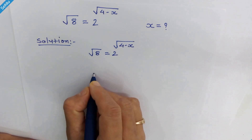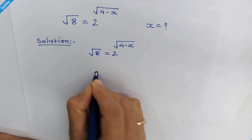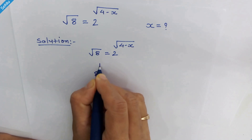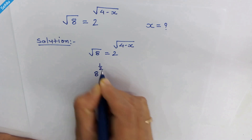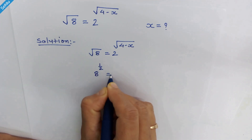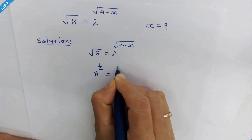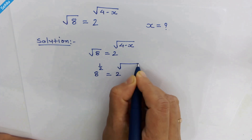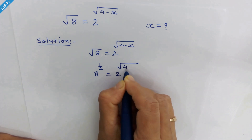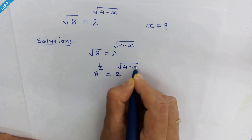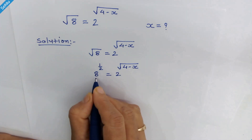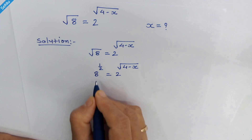Square root of 8 can be written as 8 raised to 1 upon 2, which is equal to 2 raised to square root of (4 minus x). Now, 8 is 2 cubed.